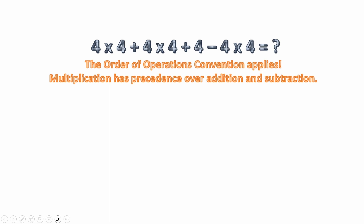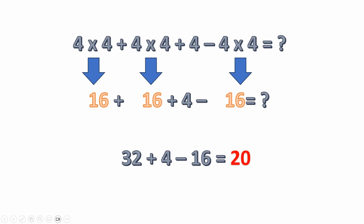First of all, the order of operations convention applies. Multiplication has precedence over addition and subtraction. That means we need to look at our multiplication first and solve that. Remember, multiplication is just shorthand for addition — it's repeated addition.